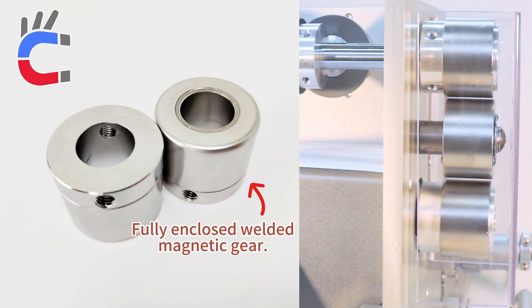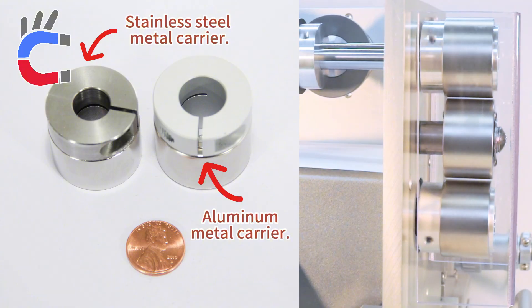In terms of materials, stainless steel-encased magnetic gears are ideal for chemical and food industries, as they are corrosion-resistant and fully isolated from air.